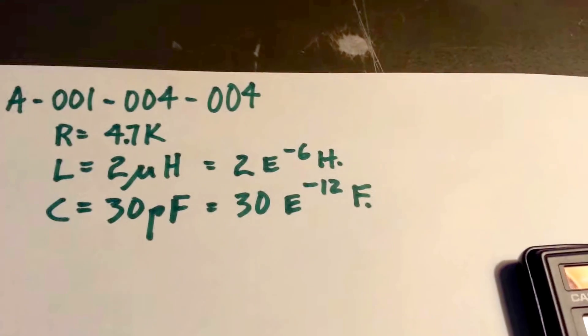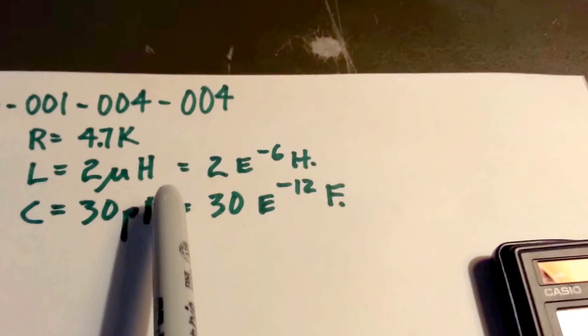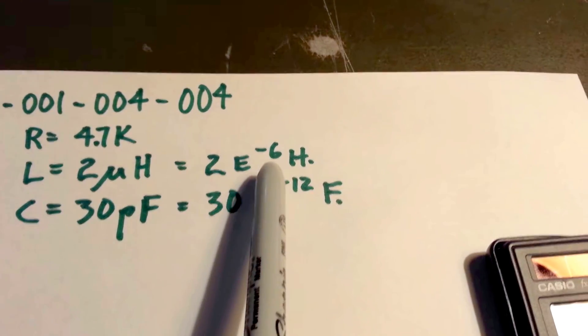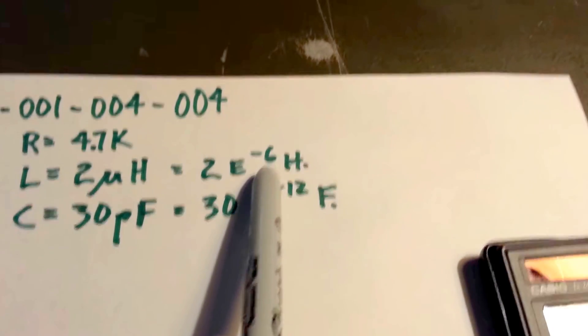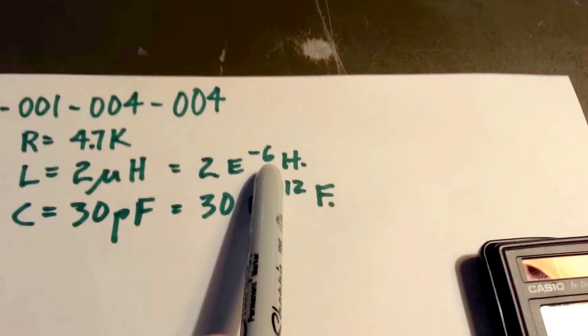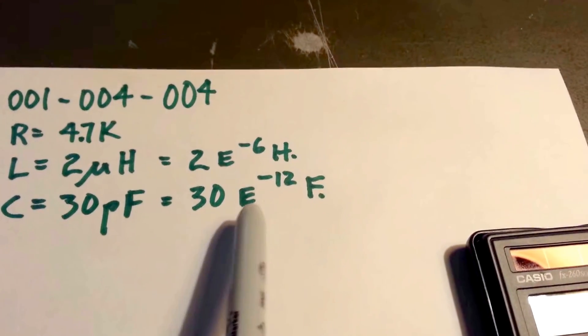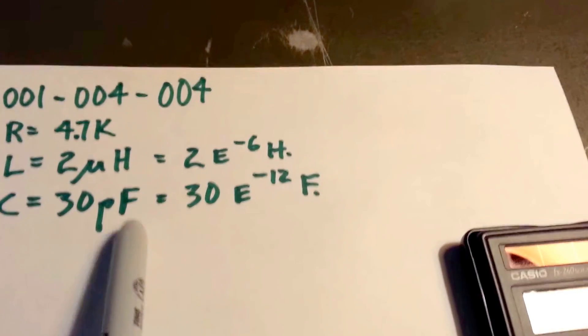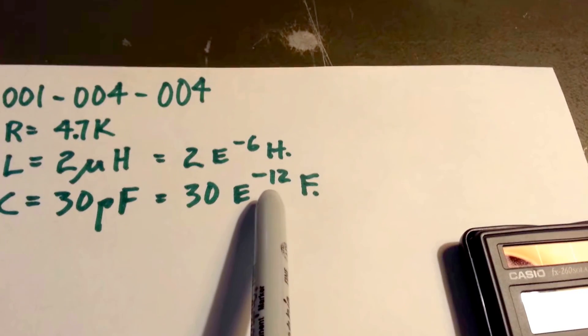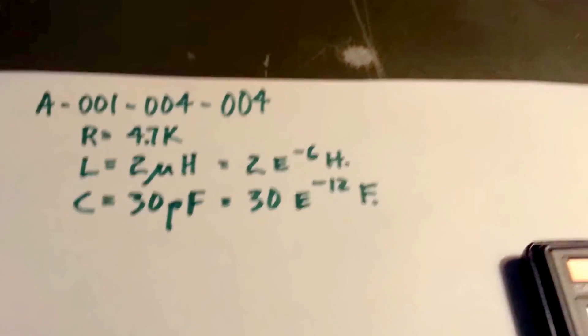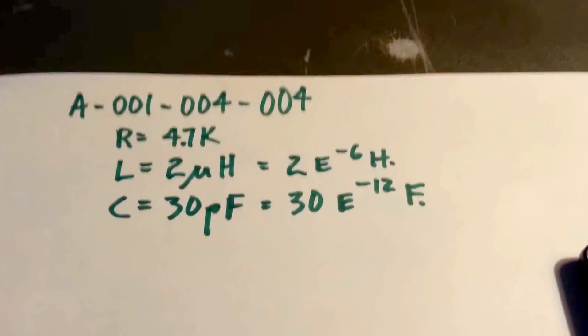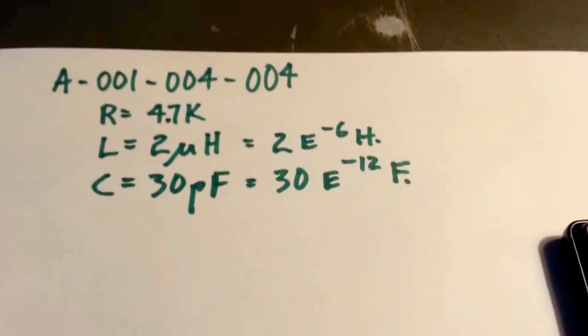So L, 2 microhenries, micro is a minus 6 or negative 6 exponent. And pico farads is a negative 12 exponent. So you can do that easily on your calculator with the EXP function.